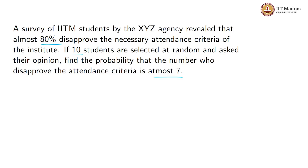A survey of IITM students by some agency revealed that almost 80% disapproved the necessary attendance criteria of the institute. 10 students are selected at random and asked their opinion. Find the probability that the number who disapproved the attendance criteria is at most 7.